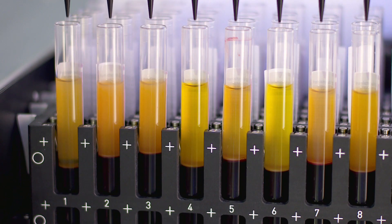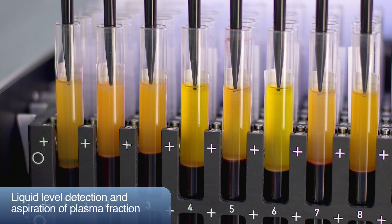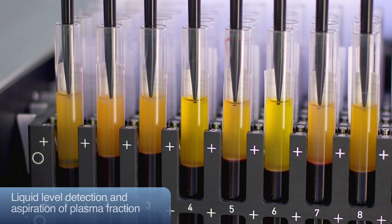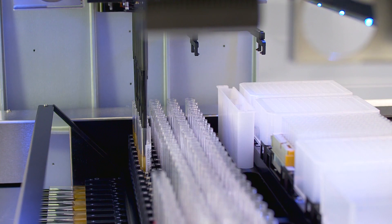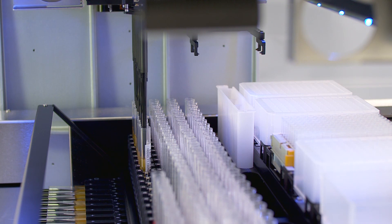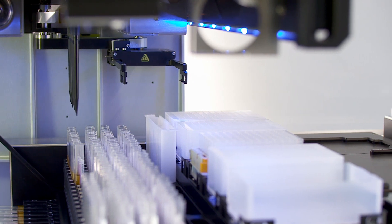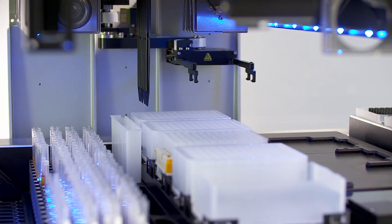In order to reach the undisturbed buffy coat, plasma is pipetted off using a Hamilton CoRe disposable tip. The plasma can be pipetted into one or multiple aliquots depending on the downstream processing or storage requirements. The Venus software performing the pipetting steps offers full flexibility in terms of volumes and number of aliquots.